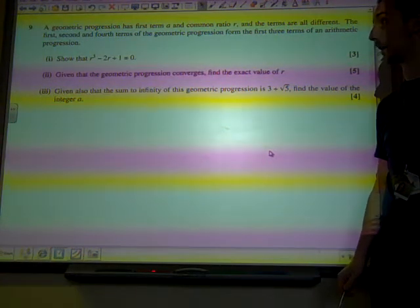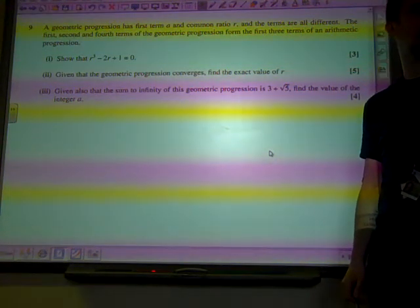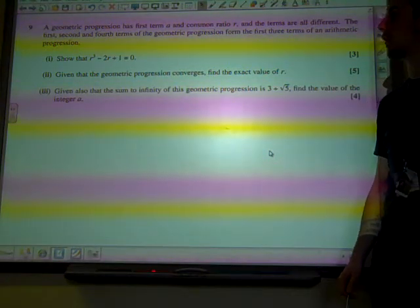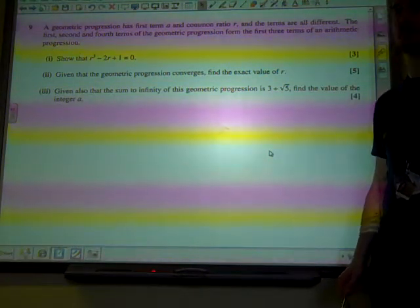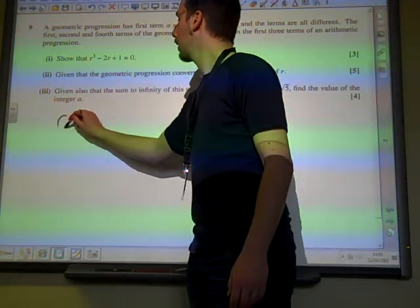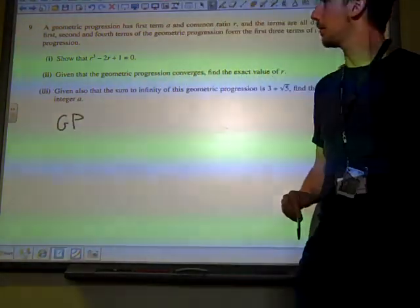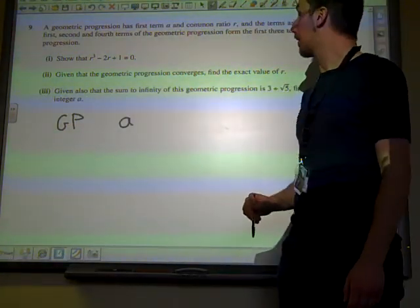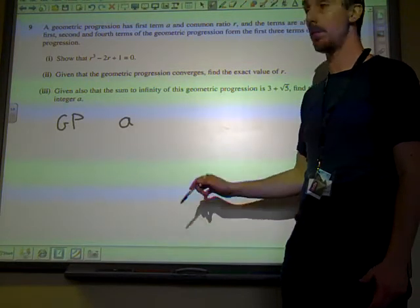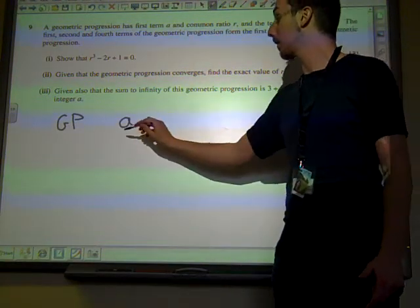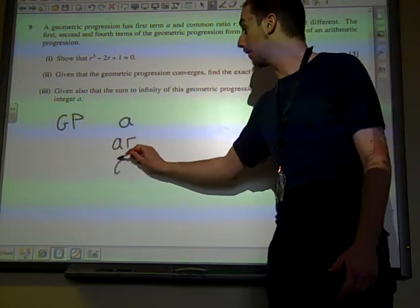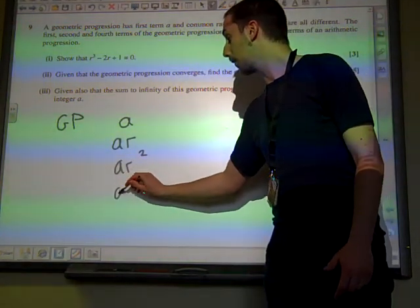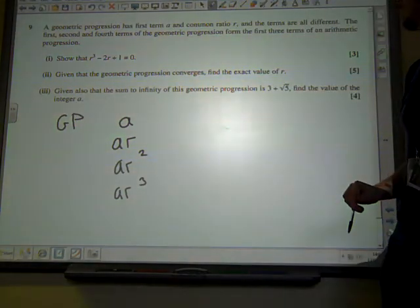So, show that R cubed minus 2R plus 1 equals 0. We've got to try and think what's going on with this. We've got a geometric progression. Let's work our way through that. The first term is A, and the common ratio is R. So, the second term is AR, and the third term is AR squared, and the fourth term is AR cubed, and so on.